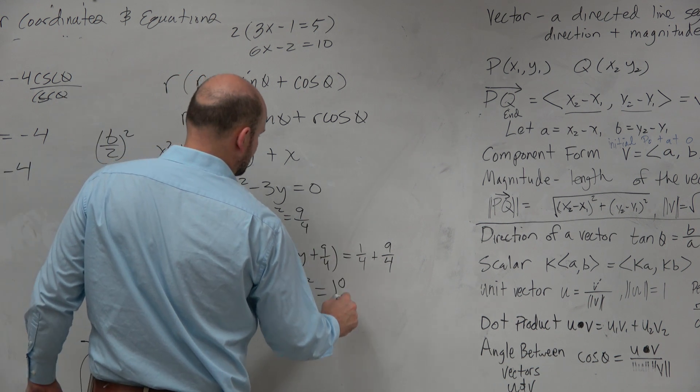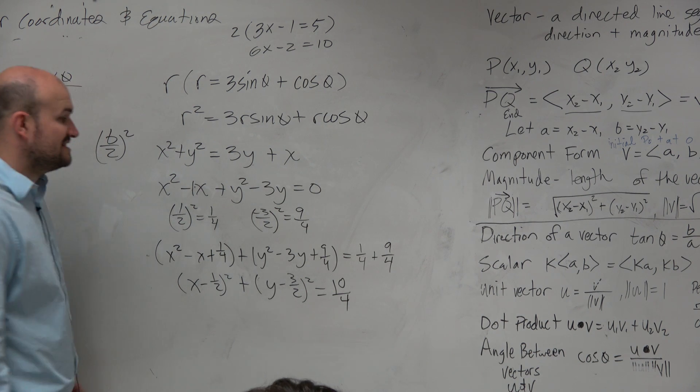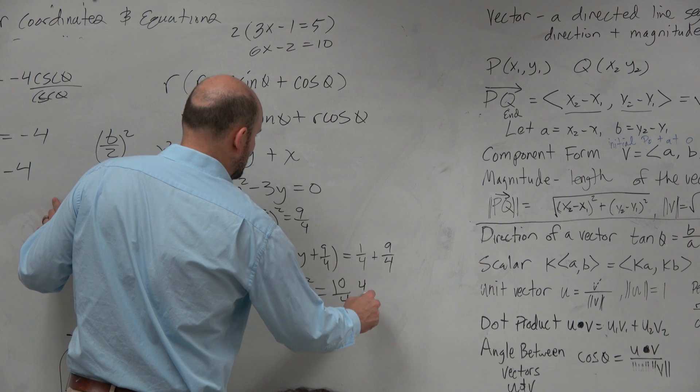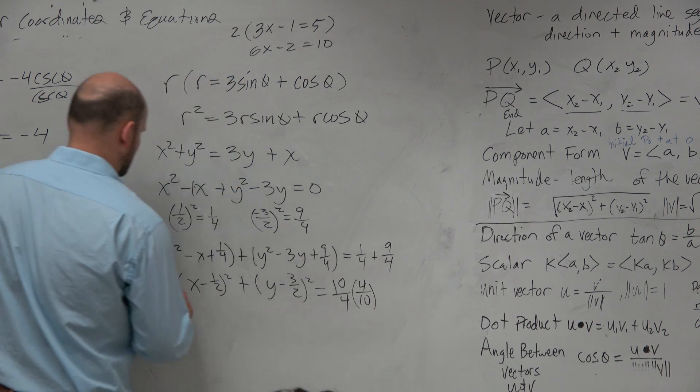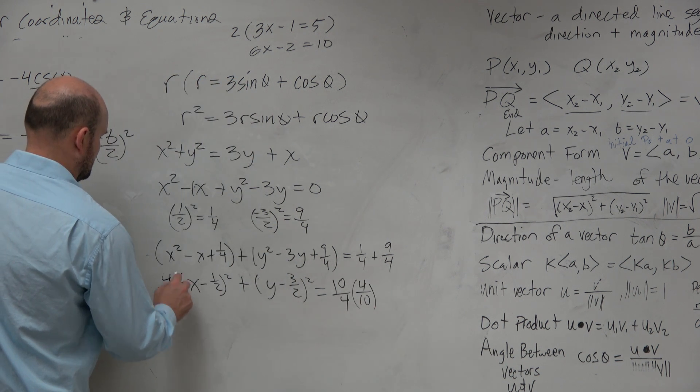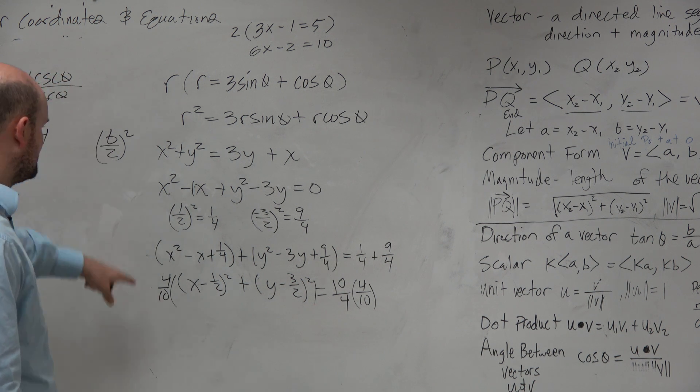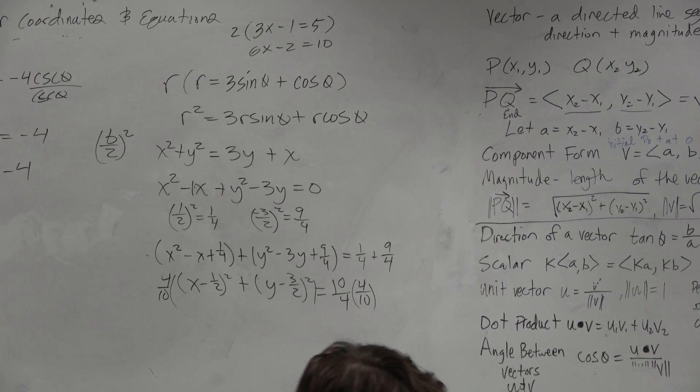Now, technically, to write the equation of the ellipse, this needs to be equal to 1. So I'd have to multiply both sides by 4 tenths. And actually, this looks like this comes a circle of this. So that is red. OK, a redecision.